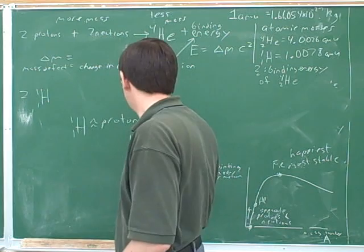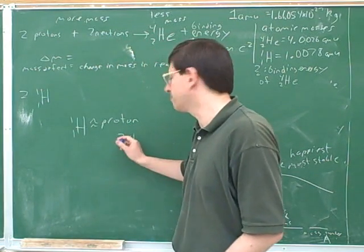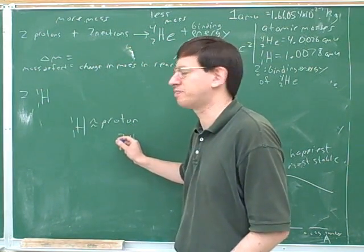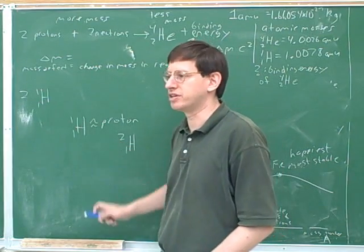Now, there's other isotopes of hydrogen. You might have heard of deuterium. This is deuterium. Well, deuterium does have a neutron. So deuterium is not just a proton, but a normal isotope of hydrogen is a proton.